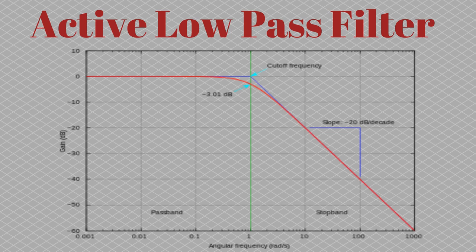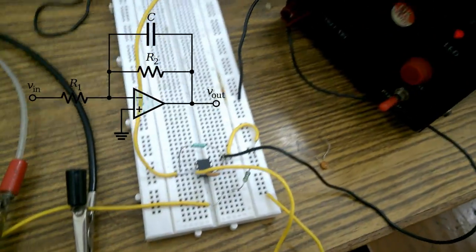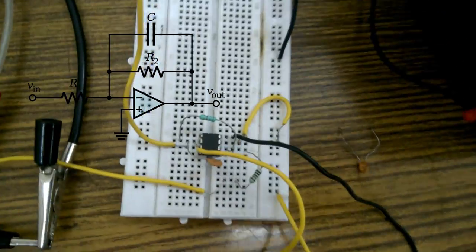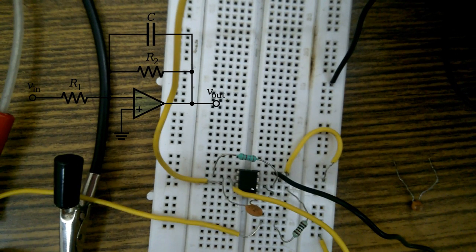Since this is only a practical demonstration, I will not be going into the theory of this graph or the low pass filter. However, I would recommend checking out my other tutorial on the active low pass filter, in which I explain how we arrive at the formula for the cutoff frequency and also explain this graph. If you only want the practical demonstration, you can continue watching this video.